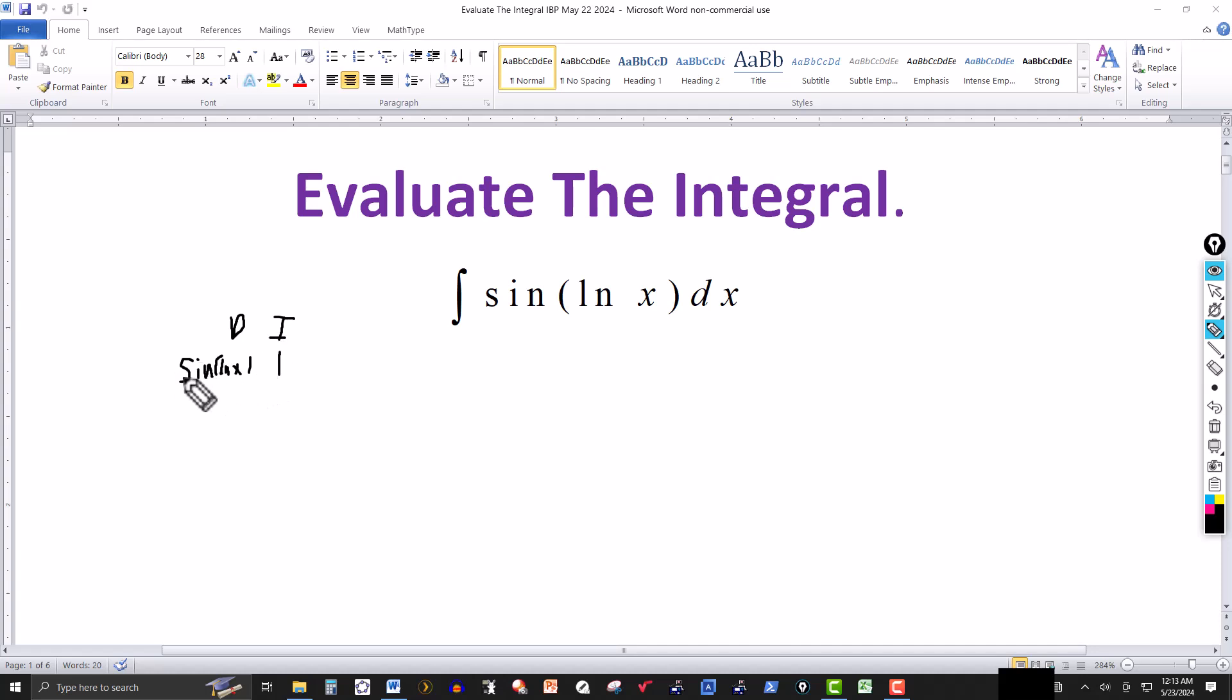So now, the sine of ln of x would be the u, and the one would be the dv. So I differentiate this. Derivative of sine is cosine of ln of x, and then chain rule. Derivative of ln of x then would be one over x, so I just put the x here. And then the one integrated, that would be x. And that's what we have.